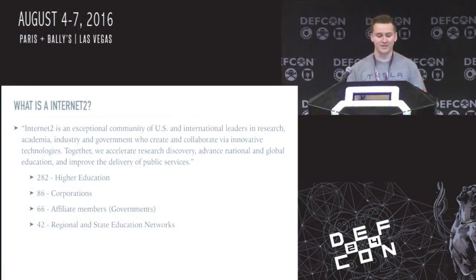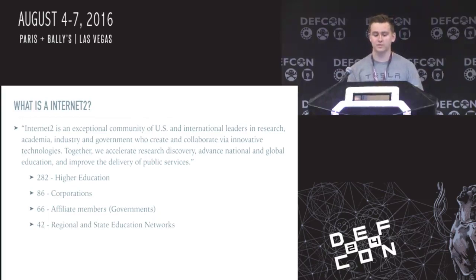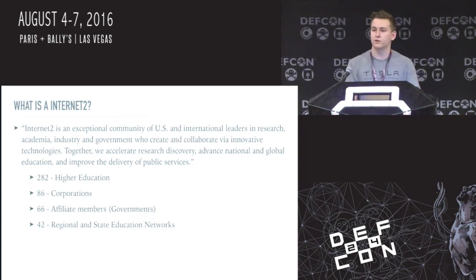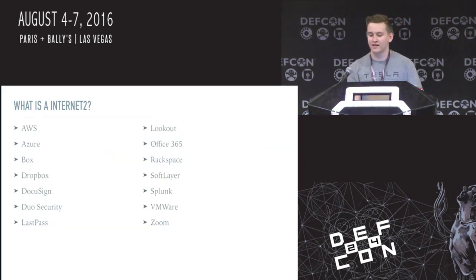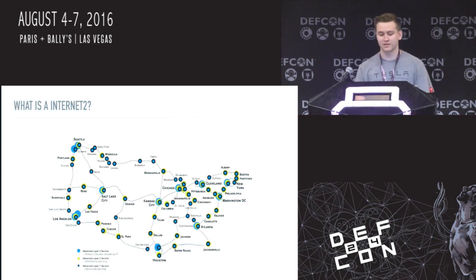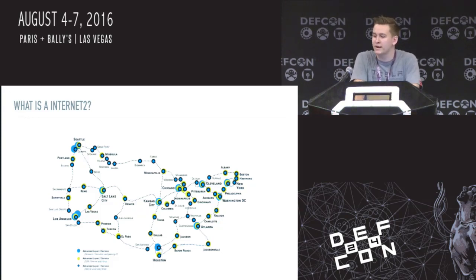If you go to their website you find an even more boring description — basically it's just a consortium of universities. There are some corporations and some government agencies, but it's mainly universities connected to this, mainly used for sharing research. One of the other things they do is they create software for all of the people in this consortium. They share the software between all companies and universities that participate, and in doing so they also share vulnerabilities between each other since they're all running the same software. They also do collective bargaining on everything from AWS to Splunk to VMware. This is a map of their actual dark fiber — it totals about 8.8 terabits a second of optical capacity and about 100 gigabits a second of Ethernet capacity.